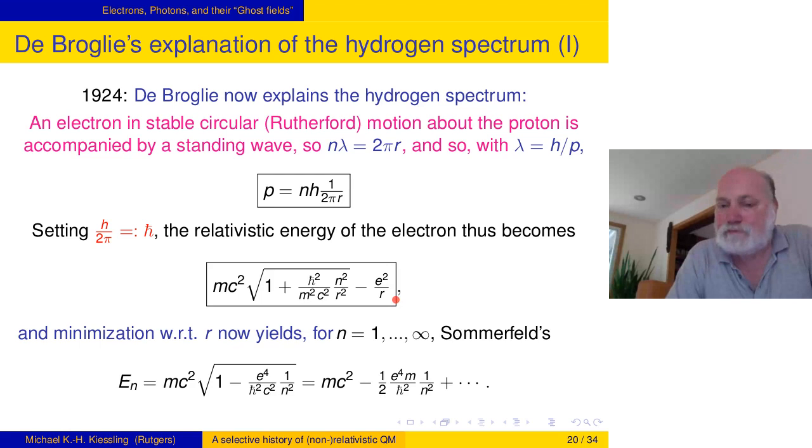Let's call h over 2 pi h-bar. When you write down the relativistic mechanical energy of an electron, that's the kinetic energy, rest energy times square root of one plus the square of its momentum divided by m squared c squared. But the momentum squared is exactly h-bar squared n squared over r squared. Then you subtract the Coulomb energy. Now you have a formula given these parameters, but there is still this funny radius of the circle and you don't know what it is. It should be a stable circular motion, a distinguished thing. The only way to find a distinguished r is to minimize.